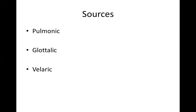We can call those sources or initiators of sounds. For the most part we've been talking about pulmonic sounds — those that come out from the lungs on an exhale, set into vibration by the vocal folds. But we can also have sounds start at the level of the glottis, called glottalic sounds, and we can create sounds from an air pocket in the mouth, called velaric sounds.